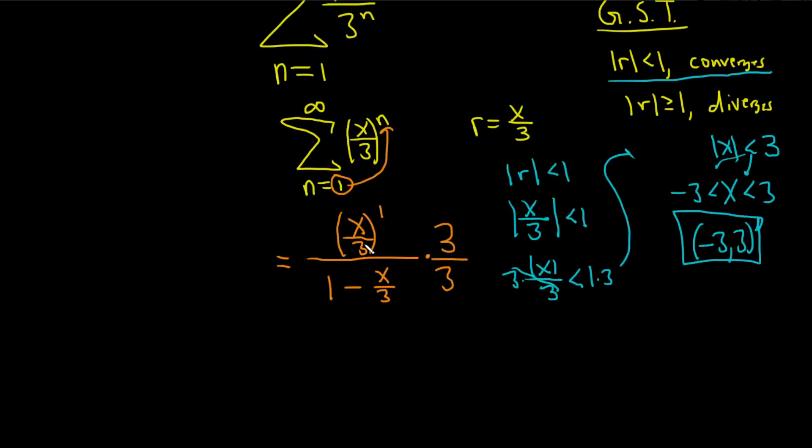Because now, in the numerator, the 3s cancel, so we get x. And in the denominator, you distribute 3. 3 times 1 is 3. 3 times this is just x.